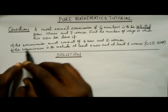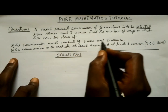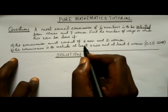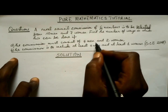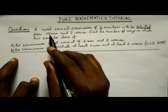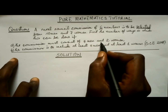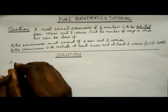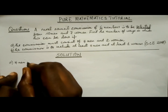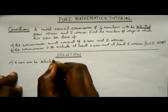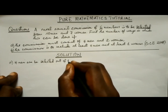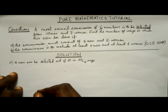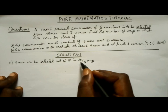Part A says the commission must consist of four men and two women. There is already a restriction: the men have to be four and the women have to be two. So we need to get six people by doing a selection of four men out of ten, and two women out of seven. Four men can be selected out of ten in 10C4 ways.